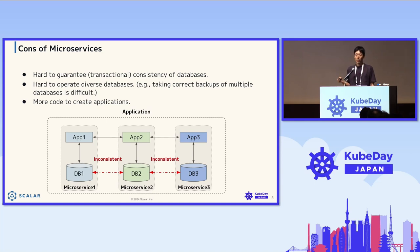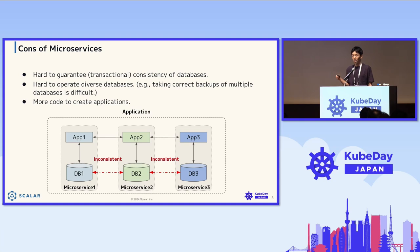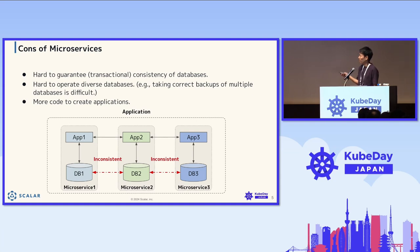Now let's look at the downsides of microservices from a data management perspective. The first is that it's hard to guarantee transactional consistency across databases. Since we employ database-per-service, we have multiple database instances, and those databases don't guarantee multi-instance consistency. The second downside is that it's hard to operate diverse databases, especially taking correct backups — for example, from two Oracle database instances there's no guaranteed way to do so.